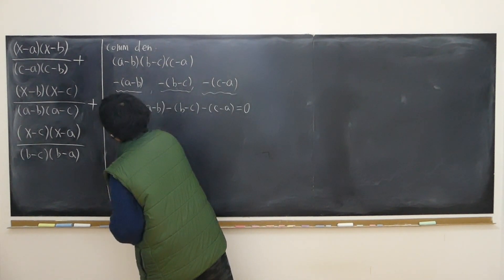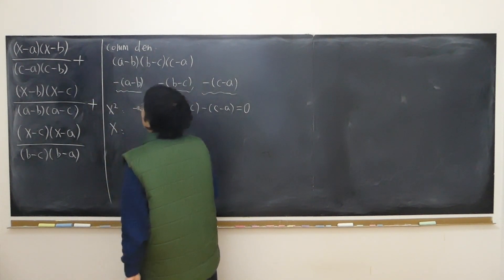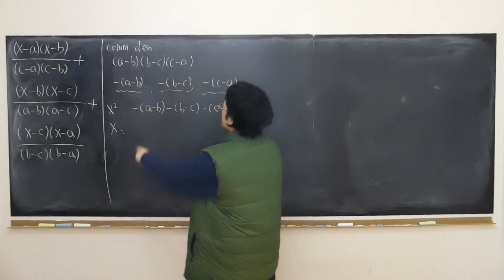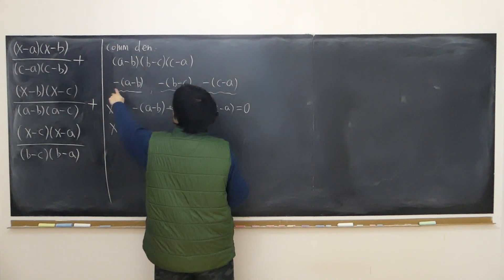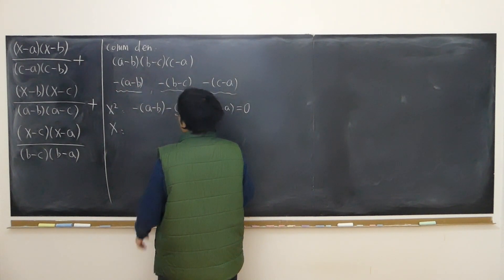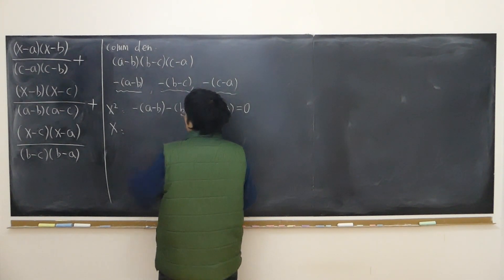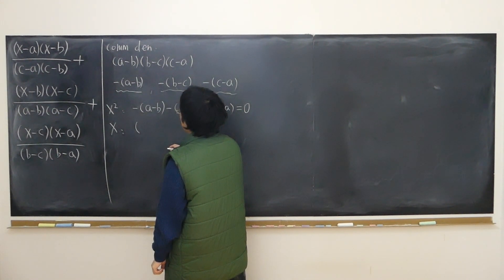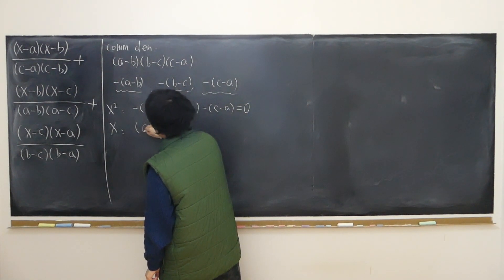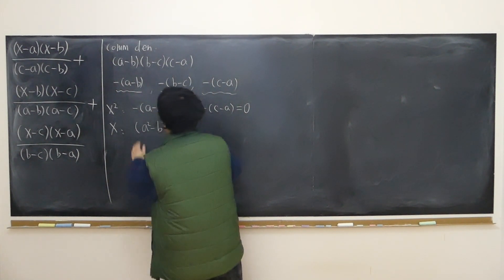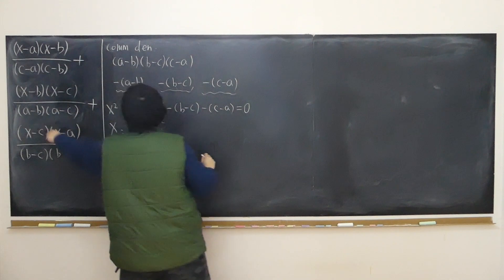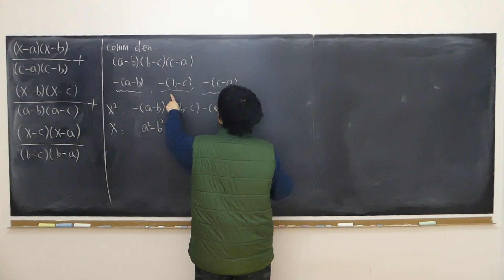So what's the x term? First term: minus bracket (a plus b) times the constant, so minus-minus of (a minus b) times bracket (a plus b). That's a difference of perfect squares — basically a-squared minus b-squared. Second term: minus bracket (b plus c) times negative of (b minus c), giving plus (b-squared minus c-squared).